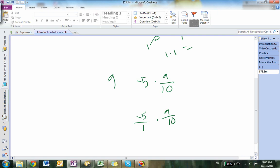Then you cross-cancel 5 and 10. 5 goes into 10, 2 times. So negative 1, and then negative 1 times a.